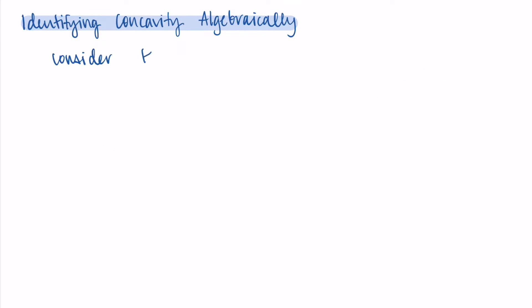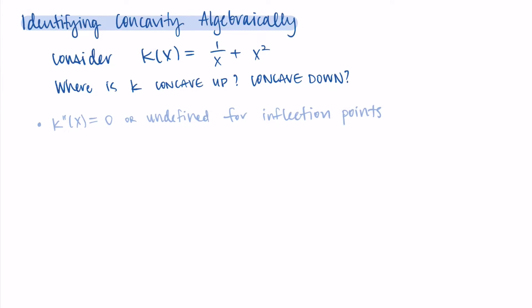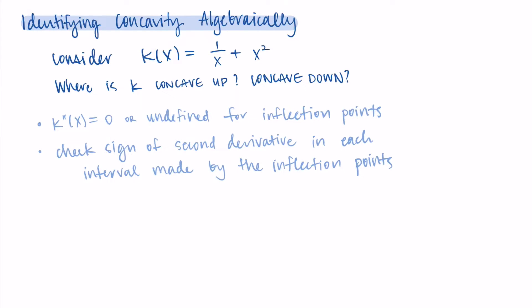Let's try a second example. Consider a function k where k(x) = 1/x + x². We want to find where k is concave up and where it's concave down. The steps are the same: find where the second derivative equals zero or is undefined for inflection points, then check the sign of the second derivative in each resulting interval. I'd suggest pausing now to try finding the first and second derivatives of k yourself.